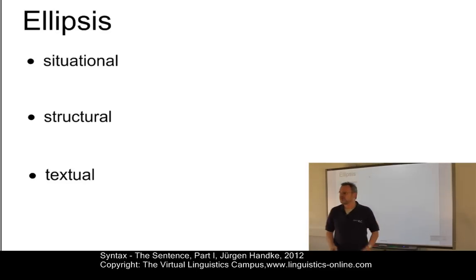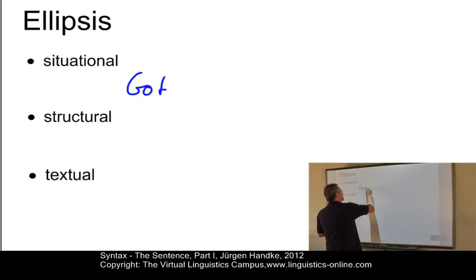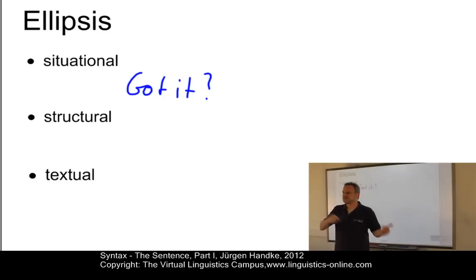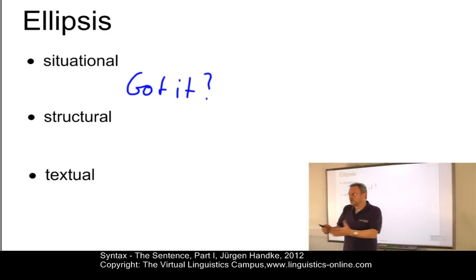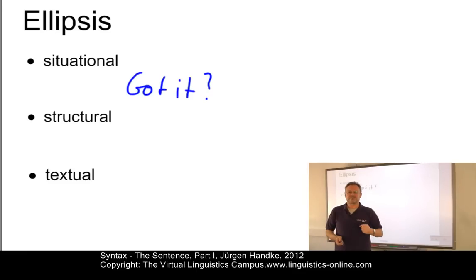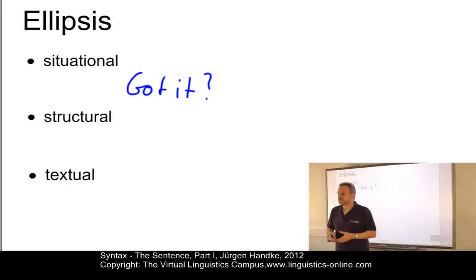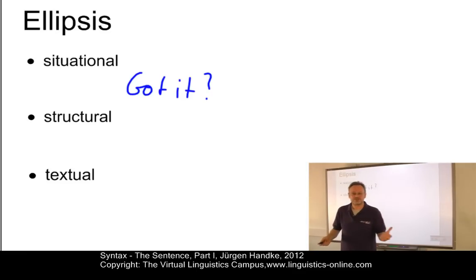Let's use one example per type of ellipsis. Here we have the classical case: "got it." Now, this looks like a minor sentence, but it isn't. Because with "got it" we could say something like "I've got the letter" — we recover the words "the letter." Or we replace "got" with "understood": "understood it," "did you understand it." This is called situational ellipsis because the interpretation depends on the knowledge of a precise extra-linguistic context.